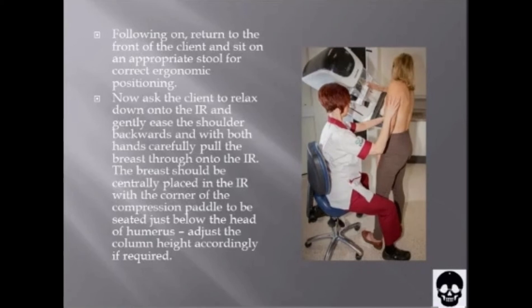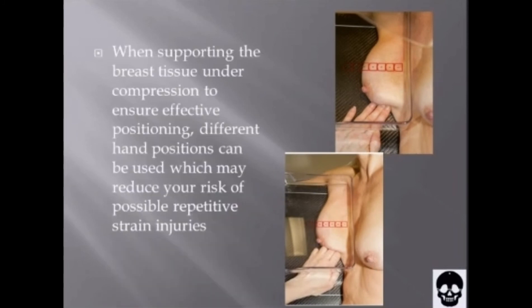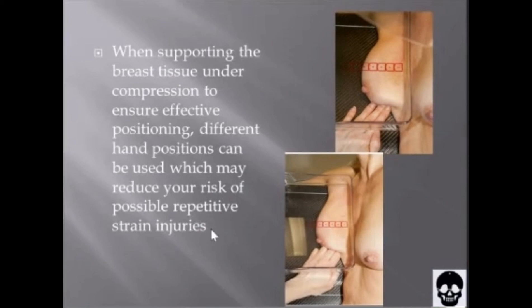Slowly apply compression force evenly, moving your hands towards the nipple as the compression paddle takes over. If possible and available on the equipment, the hand compression dial should be used to allow a slow, measured compression force application. This image shows hand-supported positioning. When supporting the breast tissue under compression to ensure effective positioning, different hand positions can be used, which may reduce your risk of possible repetitive strain injuries.